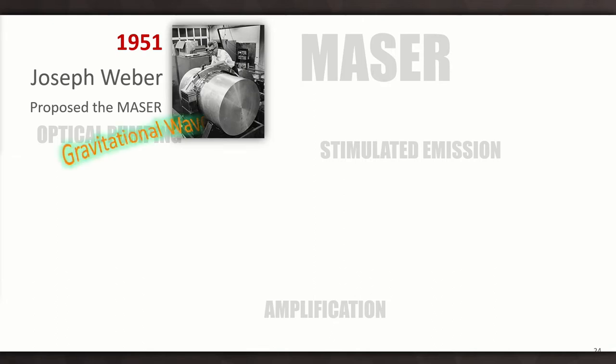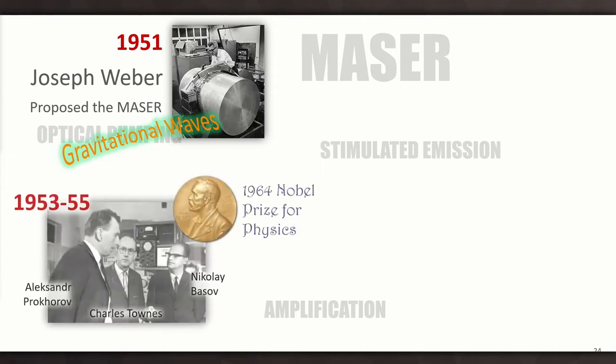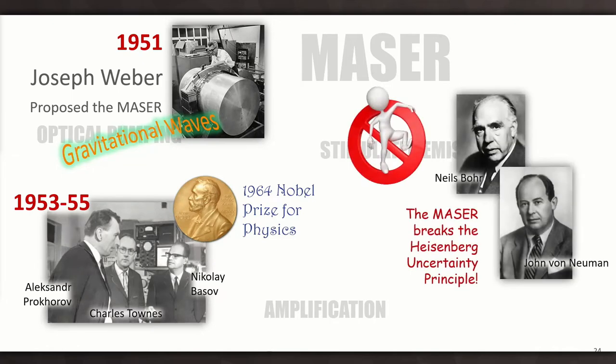Weber's an interesting guy, by the way, because he also predicted gravitational waves. And those of you who follow popular physics might be aware that we've only very recently been able to measure gravitational waves. Then a group of physicists, Prokhorov from the Soviet Union, and then Townes and Basov. Townes is from the United States. They shared the 1964 Nobel Prize for physics. And this was starting to bring all of this MASER technology together.